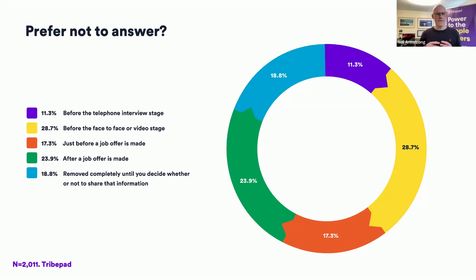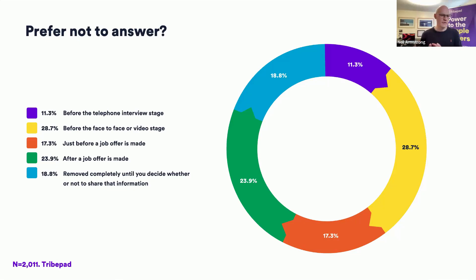As recruitment professionals, if we work in a circular methodology — hypothesis, test, get results, learn and go again — this iterative process of improvement requires data. If you want to improve the balance of female candidates or candidates from Black, Asian, and minority ethnicity backgrounds making it through the sift, you need to be able to measure before and after. Whether implementing technology, training programmes, or anti-bias workshops, you need to measure to understand if the action you've taken has improved the situation. But candidates are telling us they don't want to give us that data at the beginning of the process — so how do we make improvements and test if what we're doing is actually working?